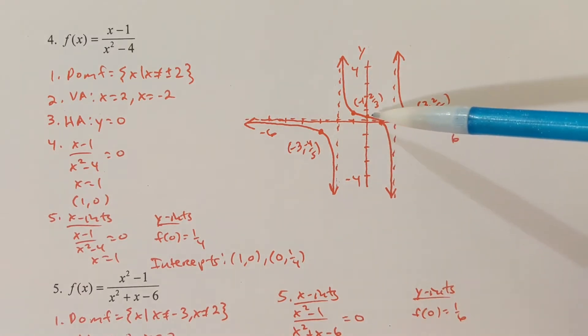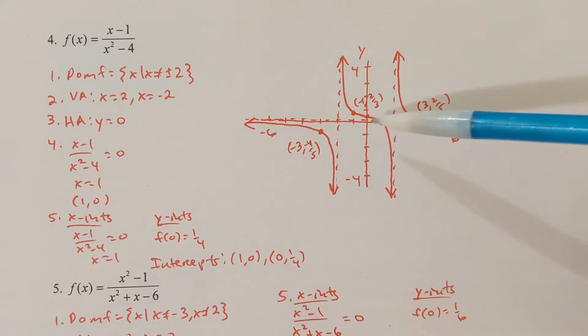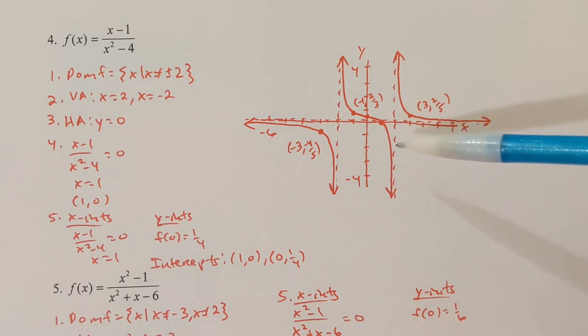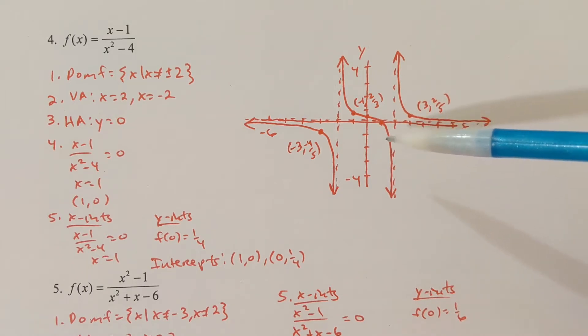f of 0 is equal to 1/4, so (0, 1/4) is the y-intercept right there. Those are the only two points I know on this graph so far.